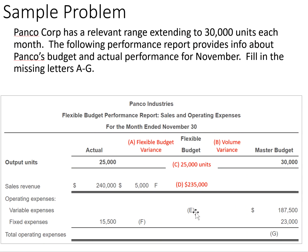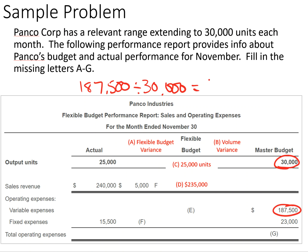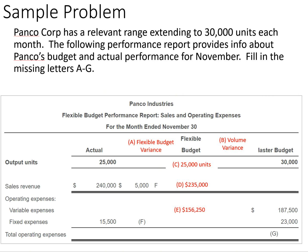For variable expenses (E), these are based on actual volume, so we'll have to work backwards. We take 187,500 — our variable expenses from the master budget — and divide by 30,000 output units, which gives us a variable cost per unit of $6.25. Multiplying that by the flexible budget of 25,000 units gives us 156,250, which is our answer for E.